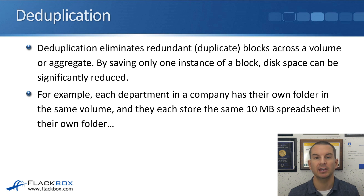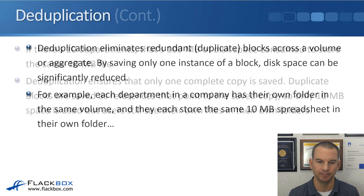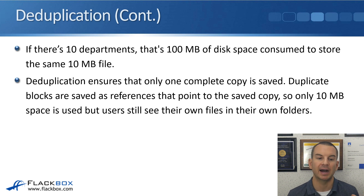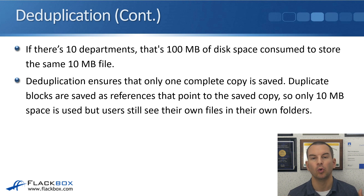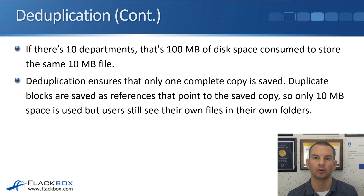For example, let's say each department in a company has their own folder in the same volume and they each store the same 10 megabyte spreadsheet. If there are 10 departments, 10 times 10 megabytes equals 100 megabytes of disk space used to store that same 10 megabyte file. Deduplication ensures only one complete copy of each block is saved. Duplicate blocks are saved as references pointing to the original copy, so only 10 megabytes of space is used, but users still see their own files in their own folders.